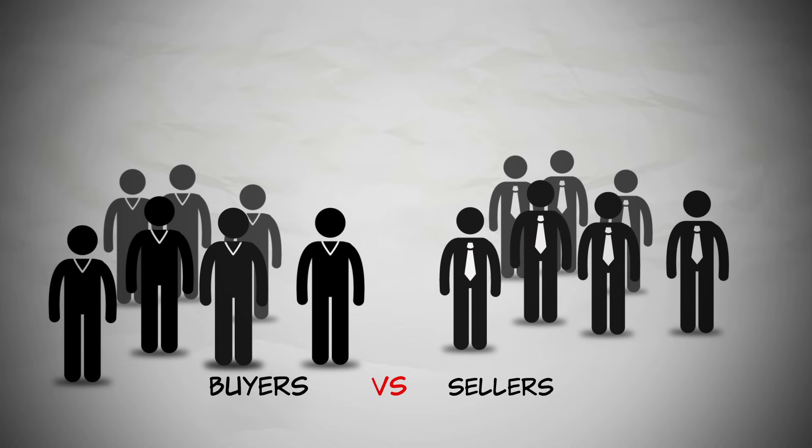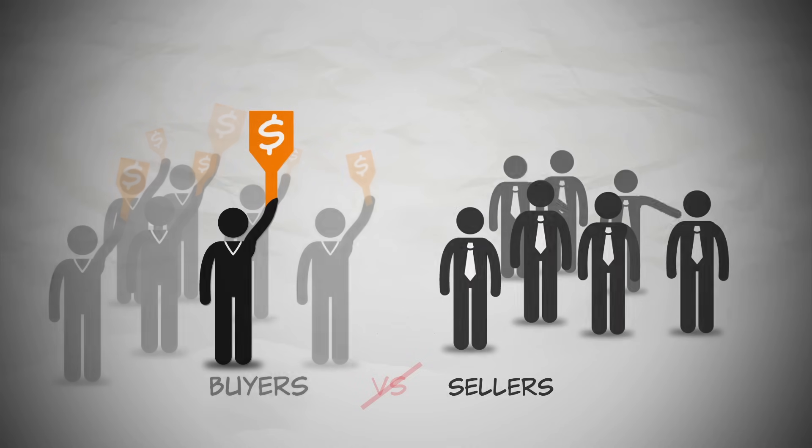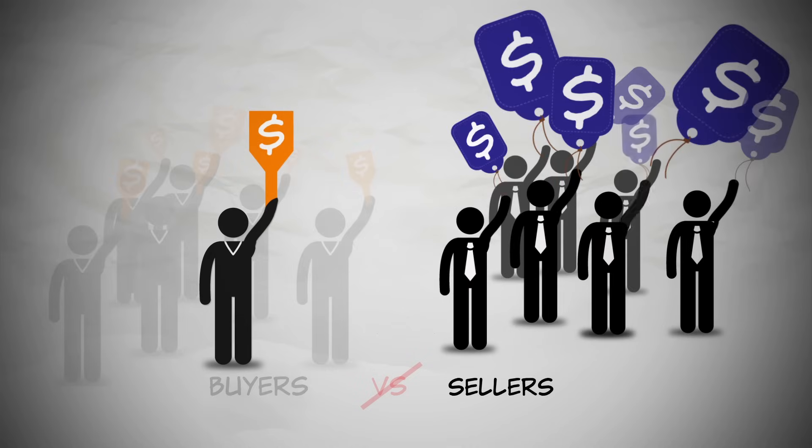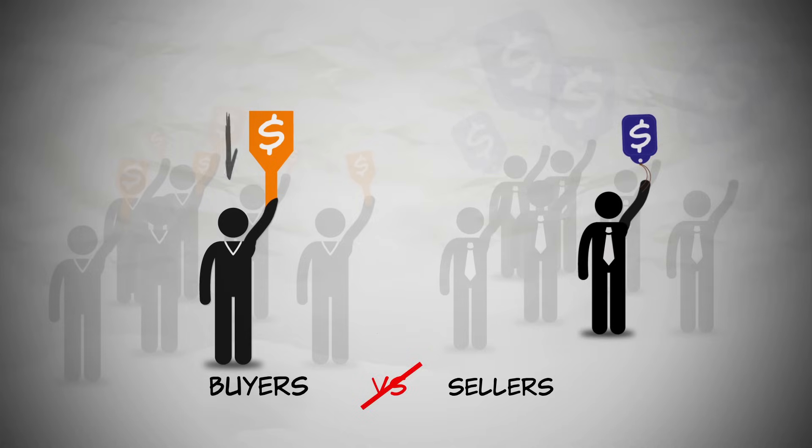To see why, the first thing to understand is that buyers don't compete against sellers. Buyers compete against other buyers. A buyer obtains goods by bidding higher than other buyers. And sellers compete against other sellers by offering to sell at lower prices. Think about it. At an auction, the buyer with the highest bid gets the item. And the seller with the lowest price makes the sale.